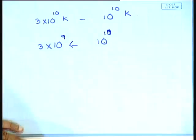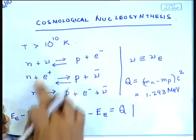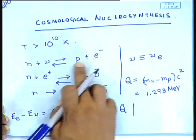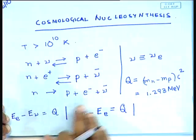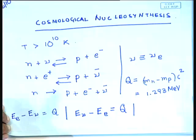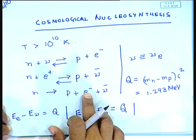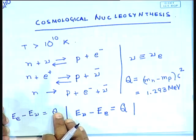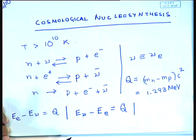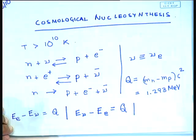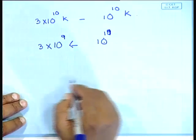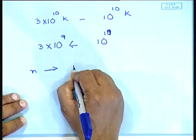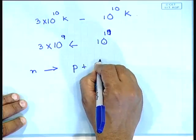In this range, the rates for the two-body processes and the three-body processes become extremely small. One of the main reasons is that positrons and electrons annihilate, causing a sharp drop in their number density. As a consequence, the two-body and three-particle reactions become extremely small.